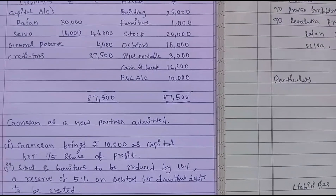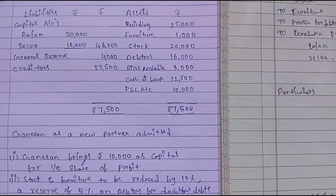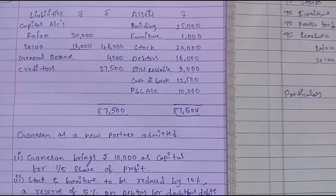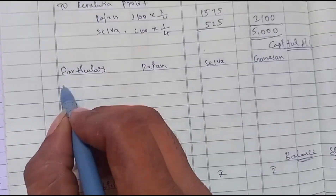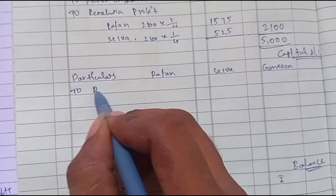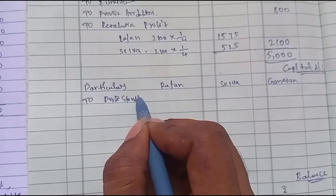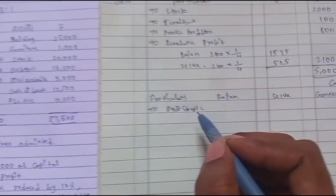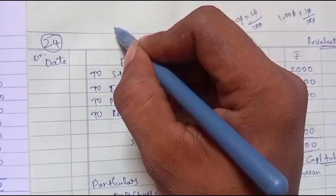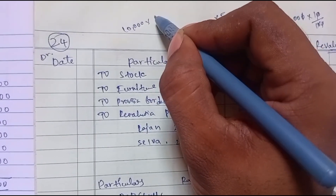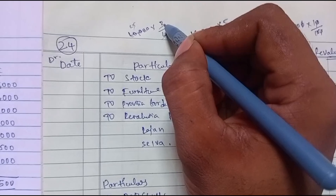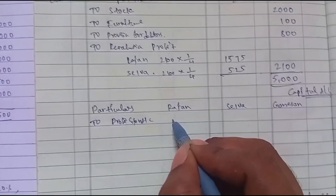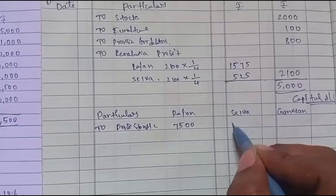From the balance sheet, profit and loss account shows a loss of 10,000 on the asset side. Since it is a loss, it is debited to the capital accounts in the ratio of 3:1. 10,000 into 3 by 4 equals 7,500 for Rajan; 10,000 into 1 by 4 equals 2,500 for Selva.